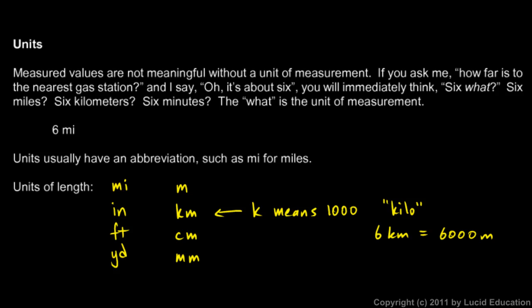There are lots of other units of length. Fathoms is a unit of length — if you've ever lived near the sea, you're probably familiar with it. A fathom is commonly used to measure depth, and one fathom is equal to 6 feet. Or nautical miles — one nautical mile is just a little bit more than one regular mile, also called a statute mile.